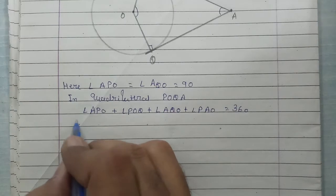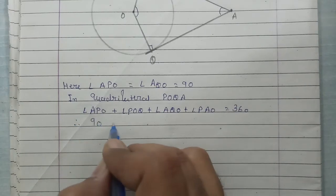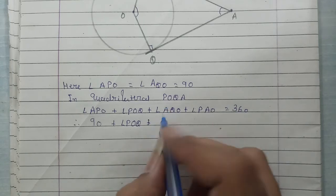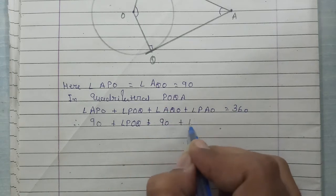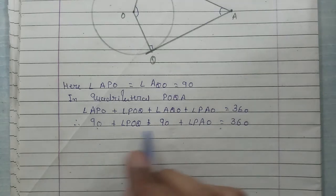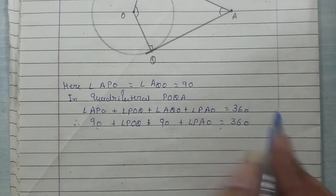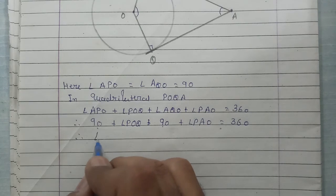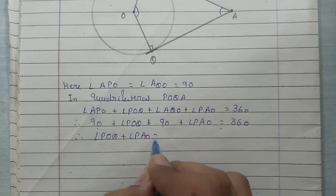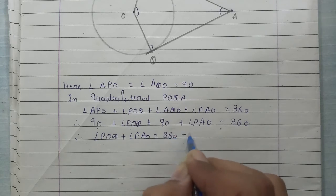Now the thing is, APO is already 90 degrees and AQO is also 90 degrees. We need to discuss POQ and PAO. Now 90 plus 90 becomes 180. Taking this to the right side, 360 minus 180, so POQ plus PAO is equal to 360 minus 180.